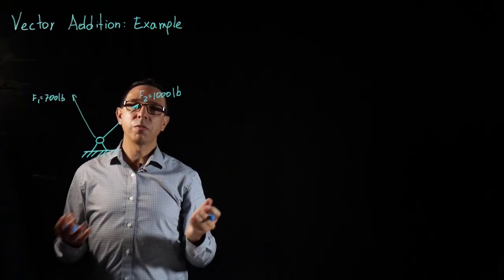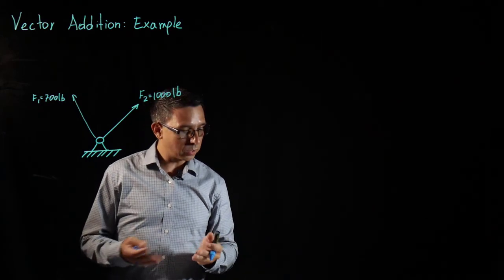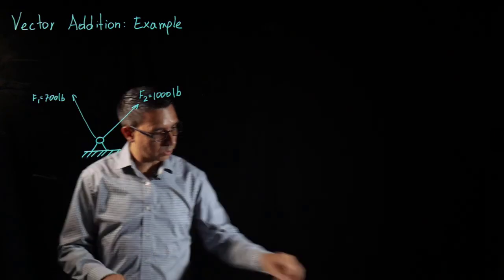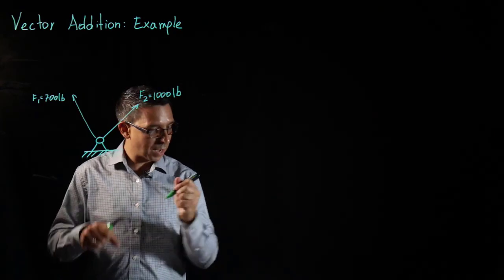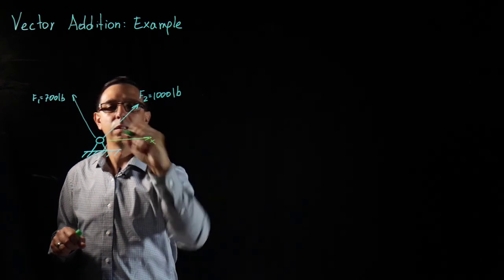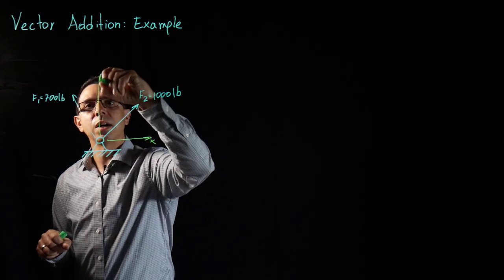We need some type of direction for these vectors and the way to give direction is with some angles. We have some axes. This over here is going to be my x-axis. This over here is going to be my y-axis.